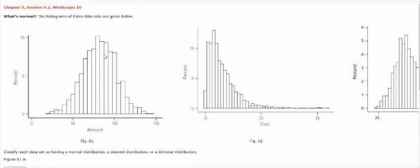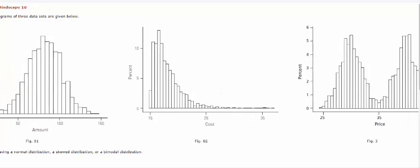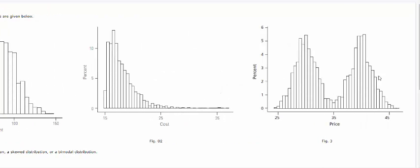I hope this helps. Remember, bell curve is a normal, this is a skewed, and this is a multimodal or a bimodal.